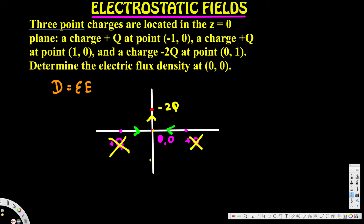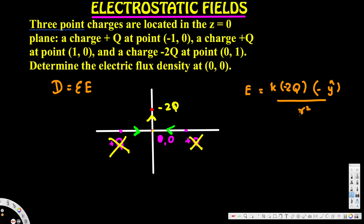For the negative charge, the electric field goes toward it. From the origin, the field points from negative y toward positive y — wait, the charge is at (0, 1) which is in the positive y direction, so the field at the origin points in the positive y direction toward it. The electric field magnitude is E = k·(2q)/r², and using k = 1/(4πε₀), this gives E = 2q/(4πε₀r²).